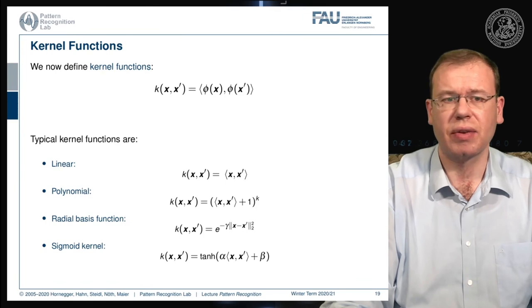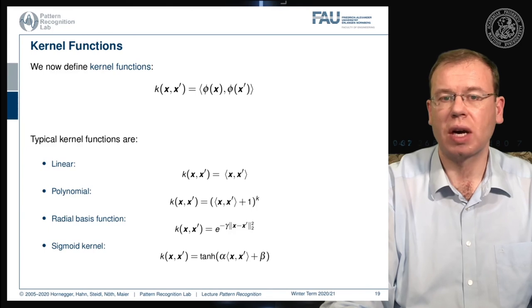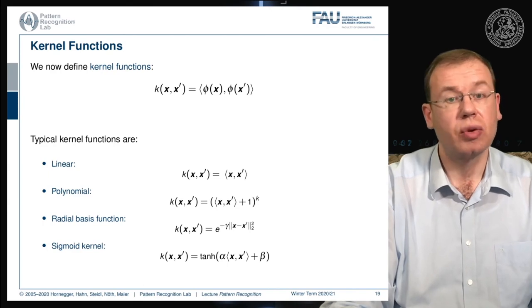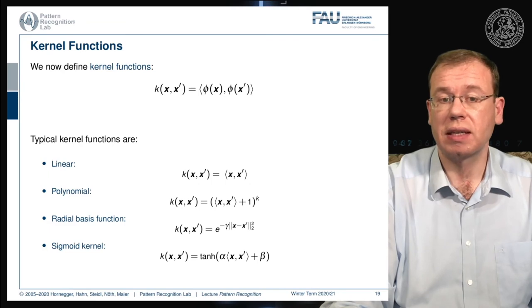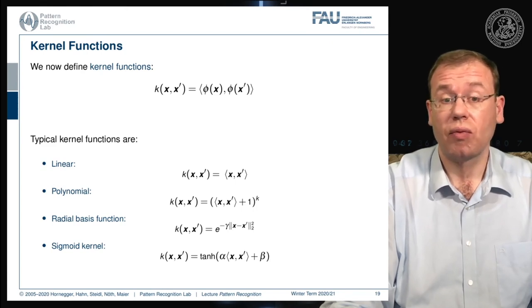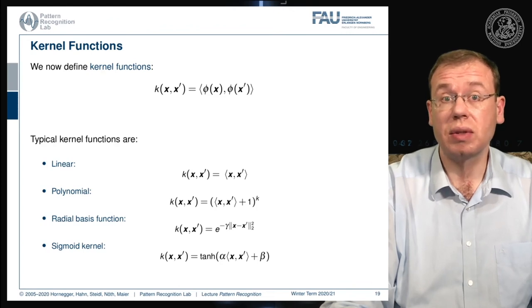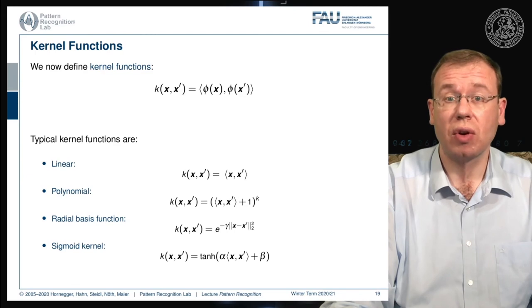We have already seen the linear kernel from the derivation. There is also the polynomial kernel, constructed as the inner product of x and x' plus one, raised to the power k, where k defines the degree. Radial basis function (RBF) kernels take the two-norm of the difference of the two vectors and apply e to the power of minus gamma. Sigmoid kernels use, for example, the hyperbolic tangent. All of these kernels are feasible, can be used, and can be pre-computed.